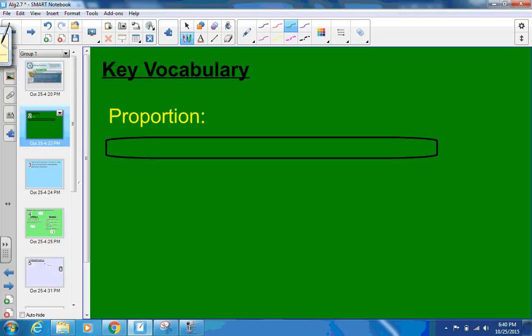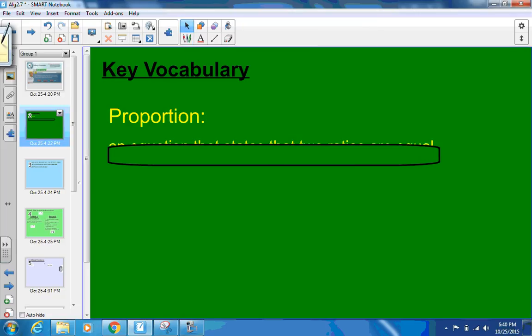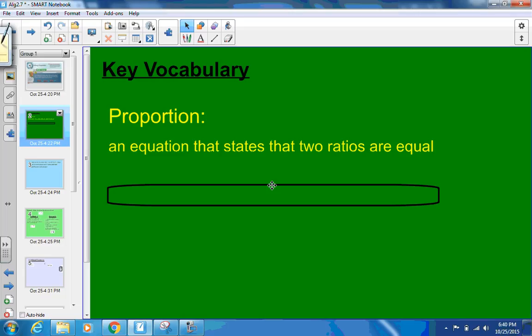In solving proportions, we need to know what a proportion is. You've done proportions before. A proportion simply is an equation that states that two ratios are equal. Remember, it has to be an equation, so it must have an equal sign. An example would be 1/2 equals 2/4. Those are two ratios set equal. That's a proportion.